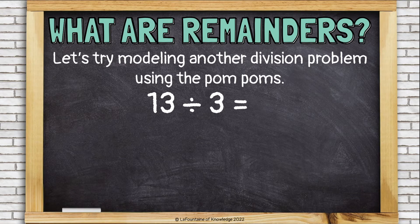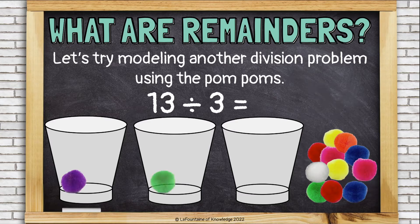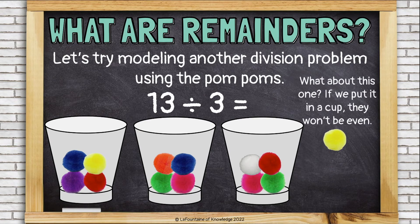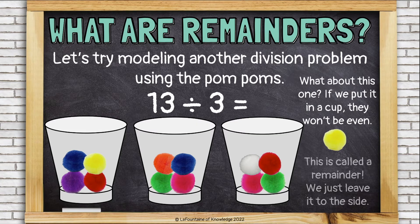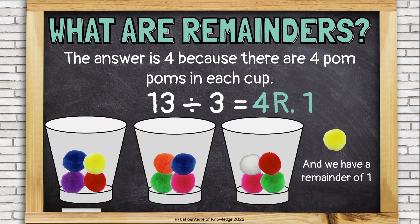Let's try modeling another division problem using pom-poms — this time we're going to have a remainder. We're going to divide 13 divided by 3, so I have 13 pom-poms and 3 cups. What about this last one? If we put it in one of the cups, they won't be even. So far they all have 4 pom-poms. If I put this last pom-pom in a cup, one of them will have 5 and the others will have 4 — and they have to have the same amount. This is called a remainder; we just leave it to the side. The answer is 4 because there are 4 pom-poms in each cup, and we have a remainder of 1. We show that by writing the letter R for remainder and then 1 next to the answer.